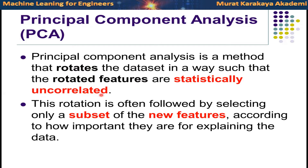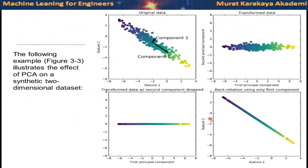But if we create new features which are uncorrelated with each other, we can use this new feature set to predict the targets much more correctly. After rotation of the data and creating the new dataset, we are going to end up with a subset of the new features. Let's see a simple example.